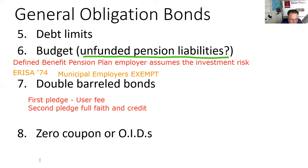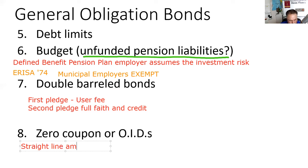Zero-coupon bonds, also known as OIDs — original issue discount bonds. You're held accountable for three issuers: corporate, municipal, and U.S. government. Whether it's a corporate zero-coupon bond, a Treasury STRIP, a Treasury receipt carved up by a broker-dealer, or a municipal issuer — for all of them, you do straight-line amortization upward, called accretion.